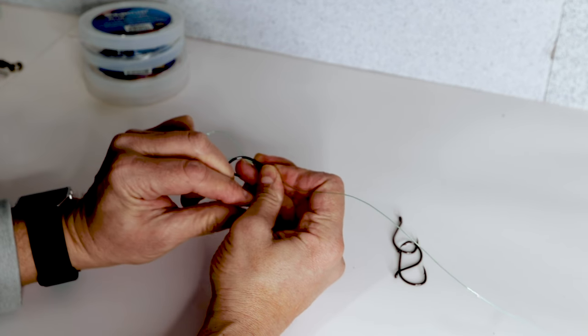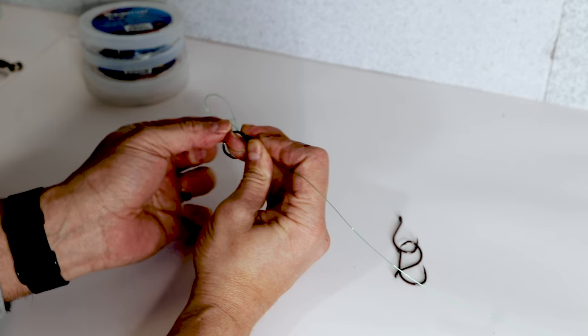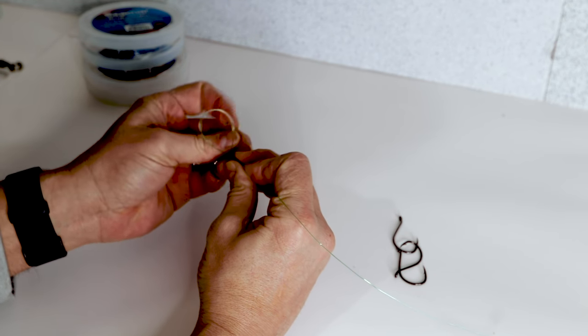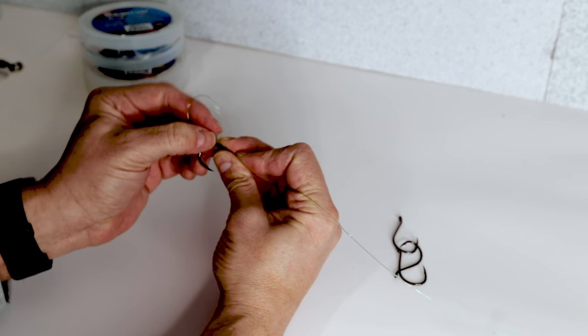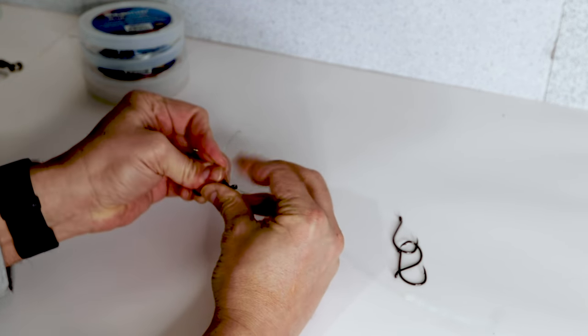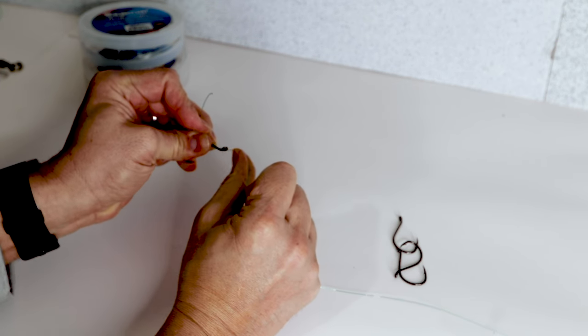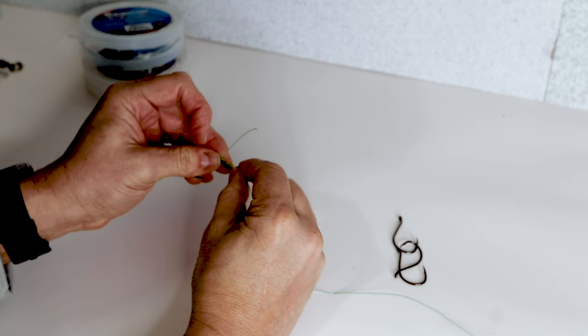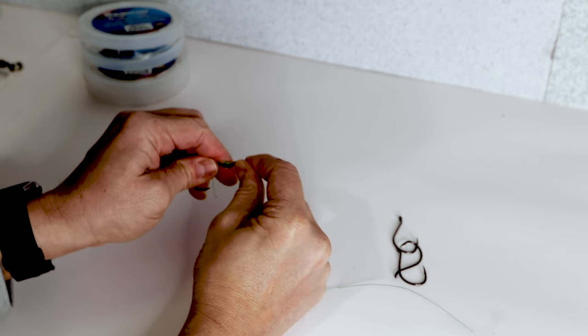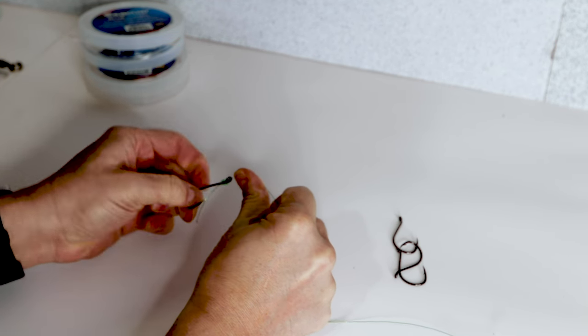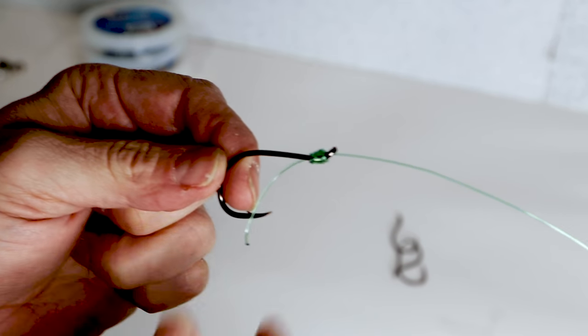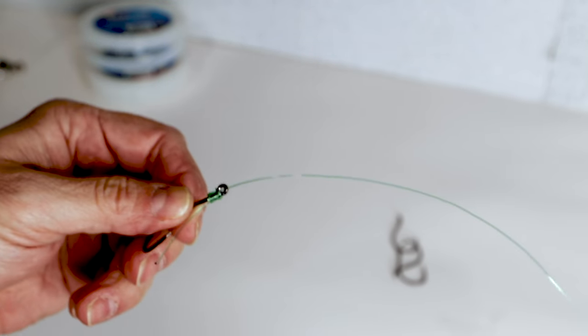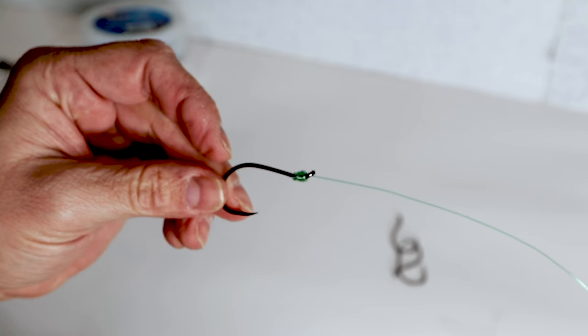And then what we want to do is finish it off by going through this exposed loop, making sure you pinch it tight so it doesn't unravel on you. From here, you're going to start pulling your main line, and it's going to draw in that exposed loop. And as you can see, it'll start cinching up on those wraps. And there you have it. Tightly coiled. The tag end is cinched underneath all those wraps. You can quickly take that off. And there's your finished product.